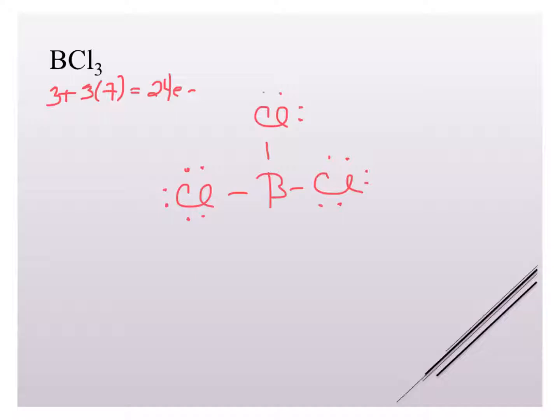At this point, we have used our 24 electrons. We'll actually see that boron is really unlikely to form an octet. It's a lot of times actually going to be our exception, our incomplete octet.